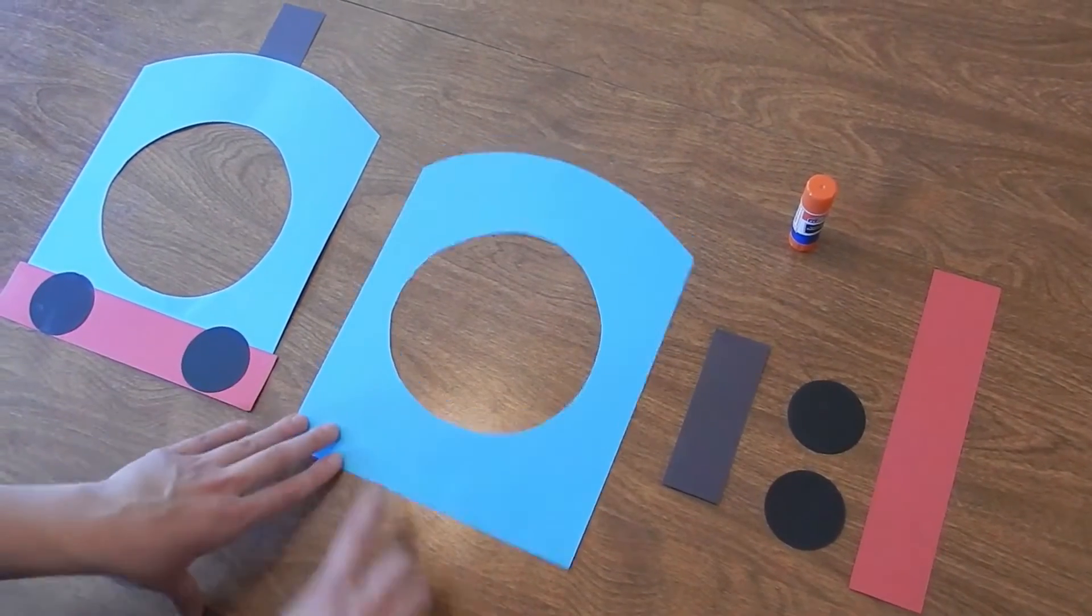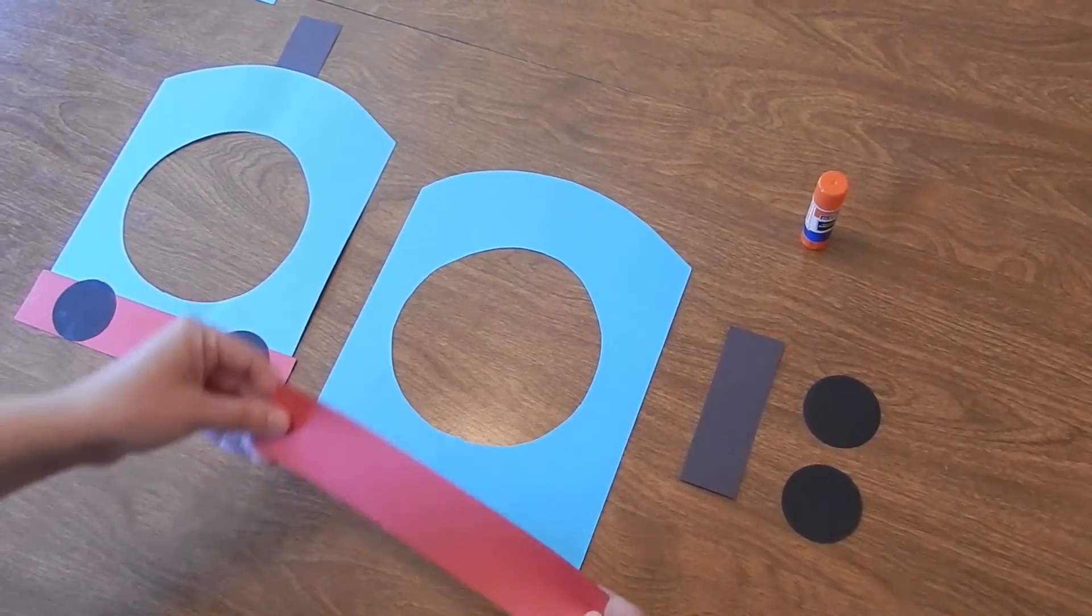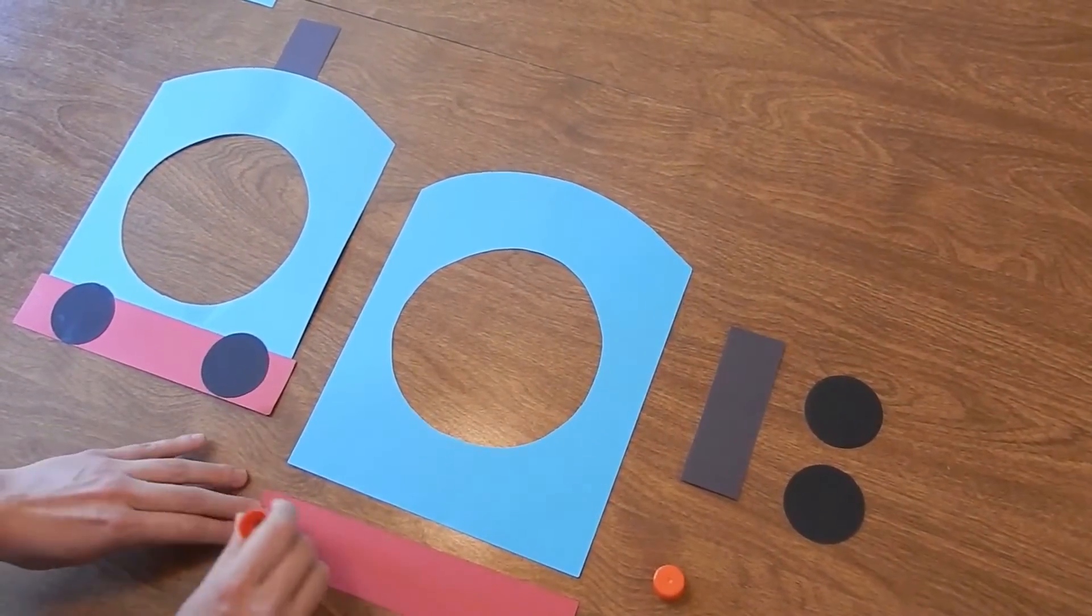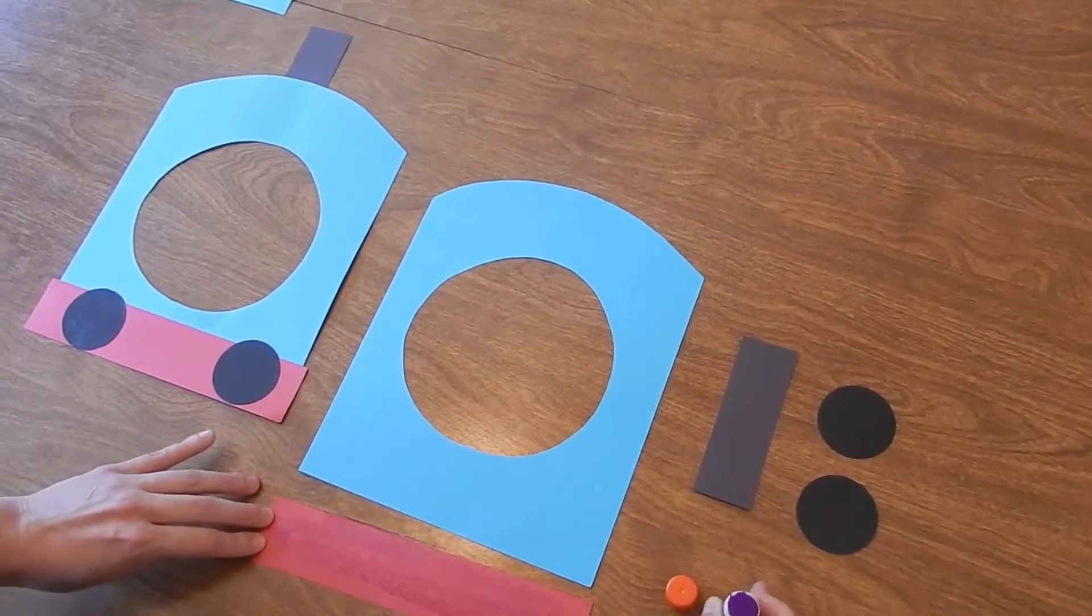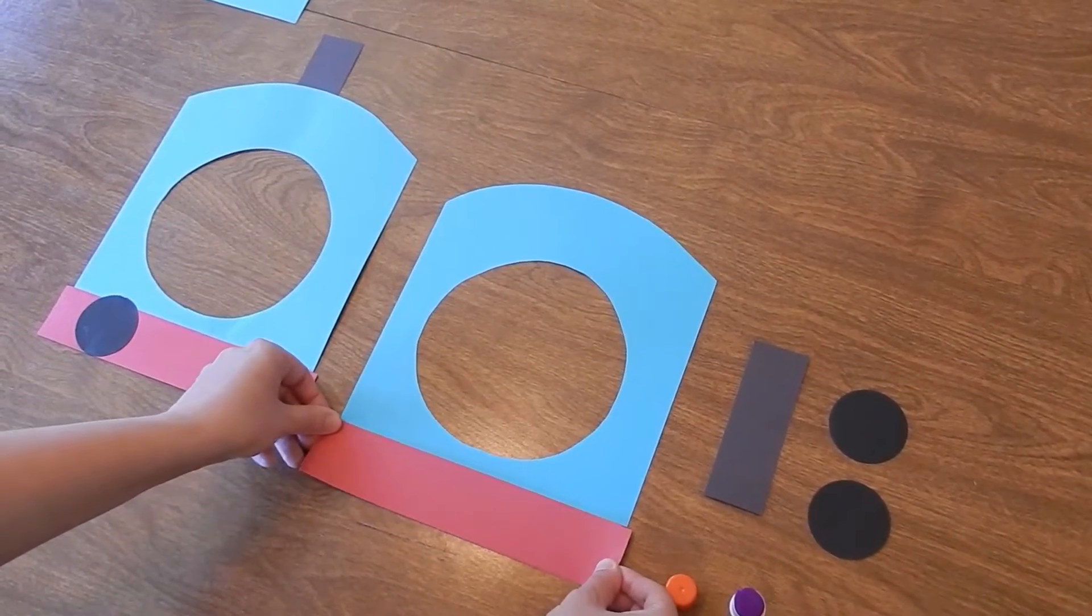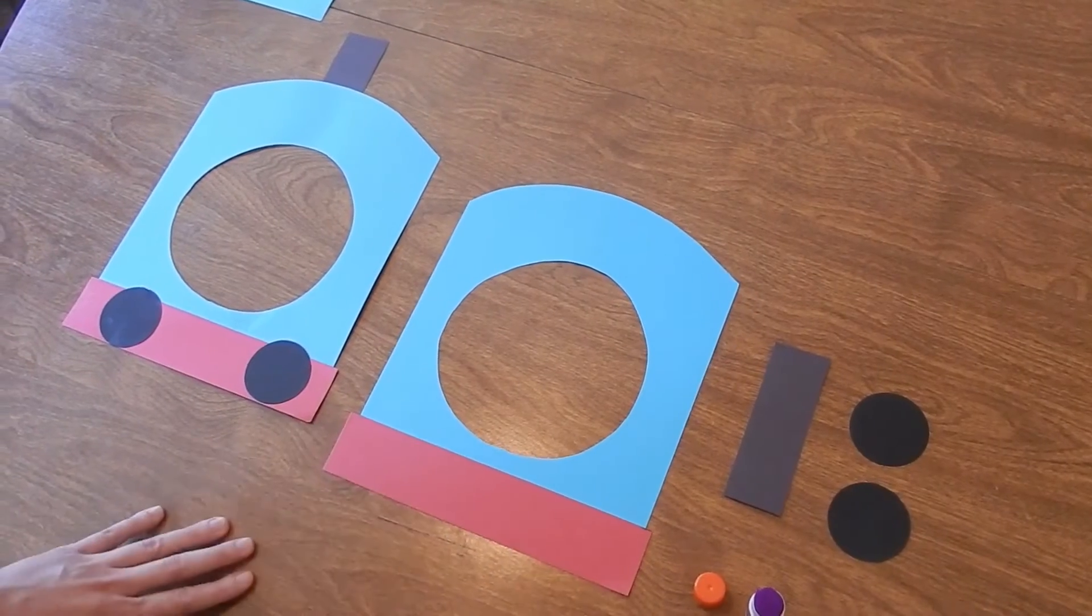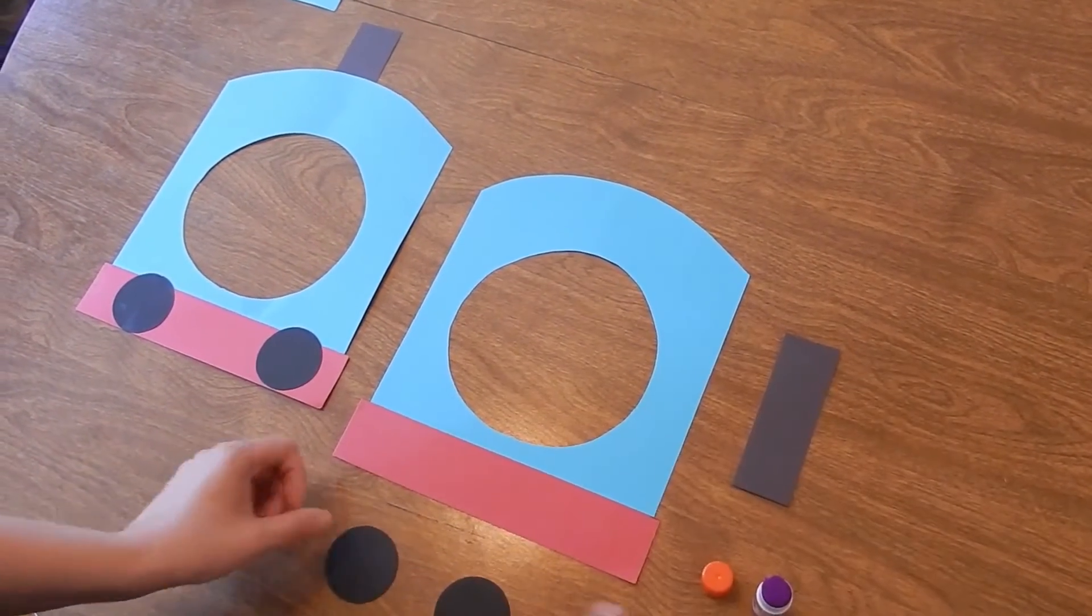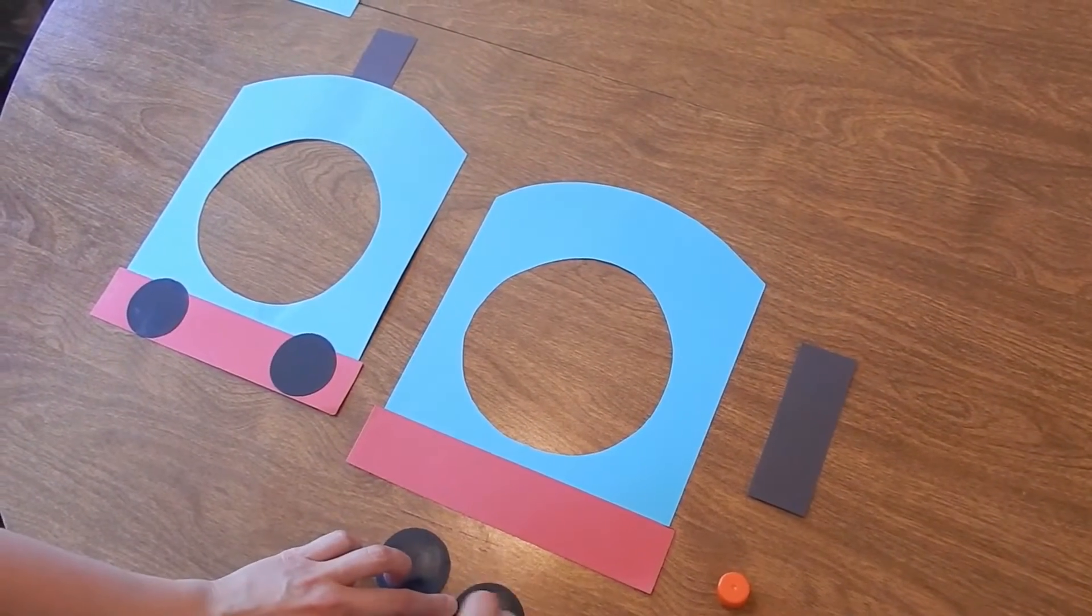Alright, so your first step after you cut out your circle is you're going to take your red piece of paper and you are going to glue that to the bottom of your mask, just like that. And then you're going to take your two circles that you've cut out and you're going to glue those on top of your red piece of paper that you just glued.